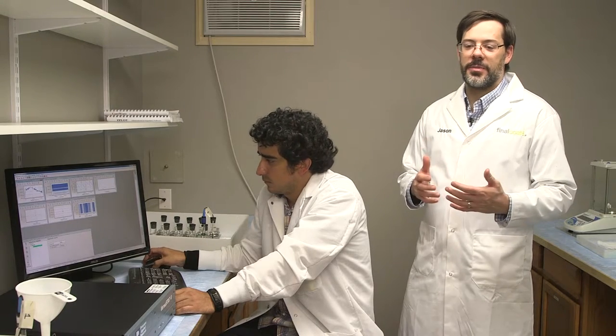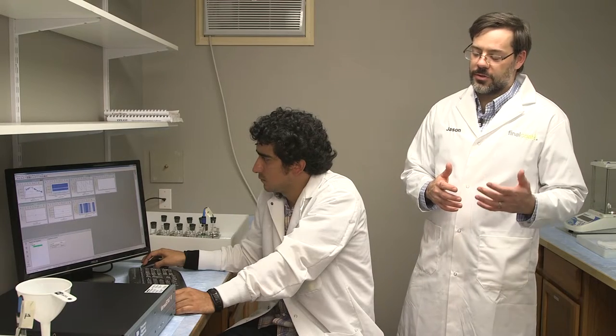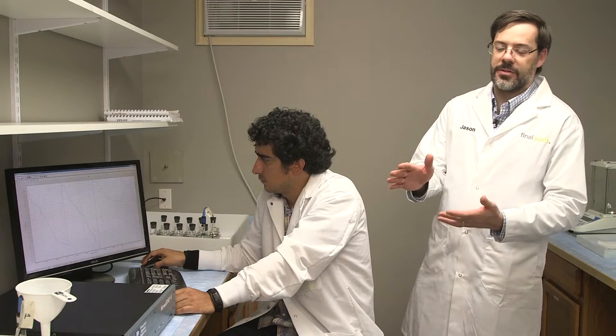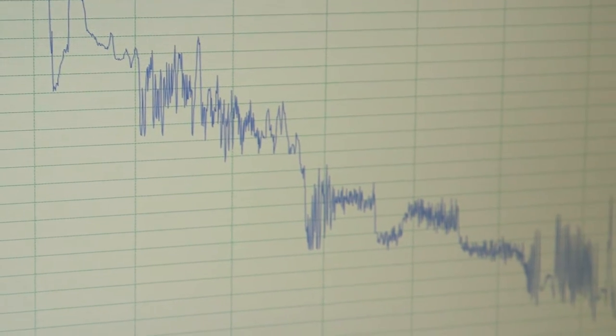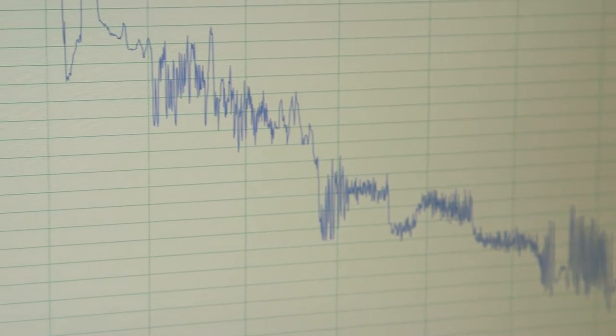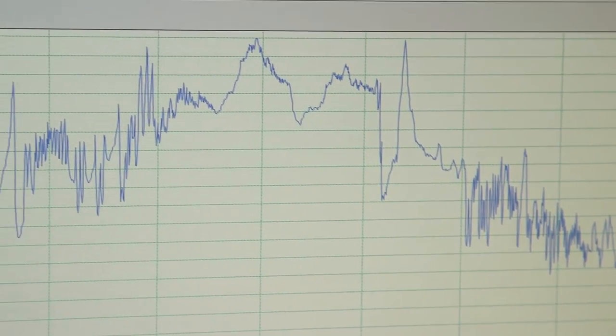The objective of our experiments is to directly test that hypothesis, and one of the tools we use for that is this computerized potentiostat right here. This is a very common tool in a corrosion lab, and it lets us do cause and effect experiments in a very systematic way.